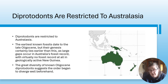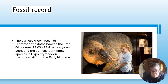Diprotodontians are restricted to Australasia. Early known fossils relate to the late Oligocene, but the genesis certainly lies earlier as large gaps occur in Australia's fossil record, with virtually no fossil record at all in geologically active New Guinea. The great diversity of known Oligocene diprotodontians suggests they would have begun to diverge well beforehand, around 23 to 28 million years ago.